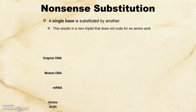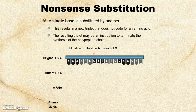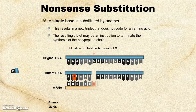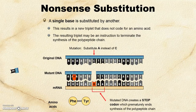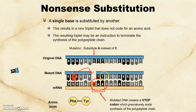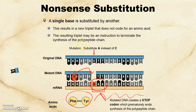A nonsense mutation is also a single substitution at a single point, but what ends up resulting is that it turns into a stop codon. So we're actually going to be missing an entire chunk of amino acids — our protein is going to be super short. It's just going to be kind of nonsense; it's not going to be a whole protein at all.